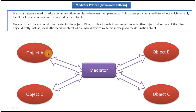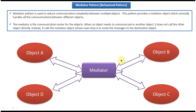Suppose Object A wants to send some message to Object B. Then Object A has to send the message to the Mediator, and the Mediator will receive the message and route it to Object B. So here the Mediator is a central point for all the objects and is responsible for routing the message to the destination object.